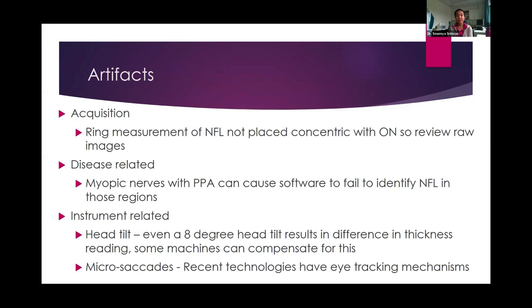Some artifacts you can encounter include acquisition artifacts — if your ring measurement of the nerve fiber layer is not placed concentric with the optic nerve, you can look at raw images to identify this. Disease-related artifacts can occur, for example when patients have peripapillary atrophy. Instrument-related artifacts include head tilt — even about an eight-degree head tilt can result in a difference in thickness reading, though some newer machines can compensate. Microsaccades can also cause artifacts, though recent technologies have eye-tracking mechanisms to reduce these.